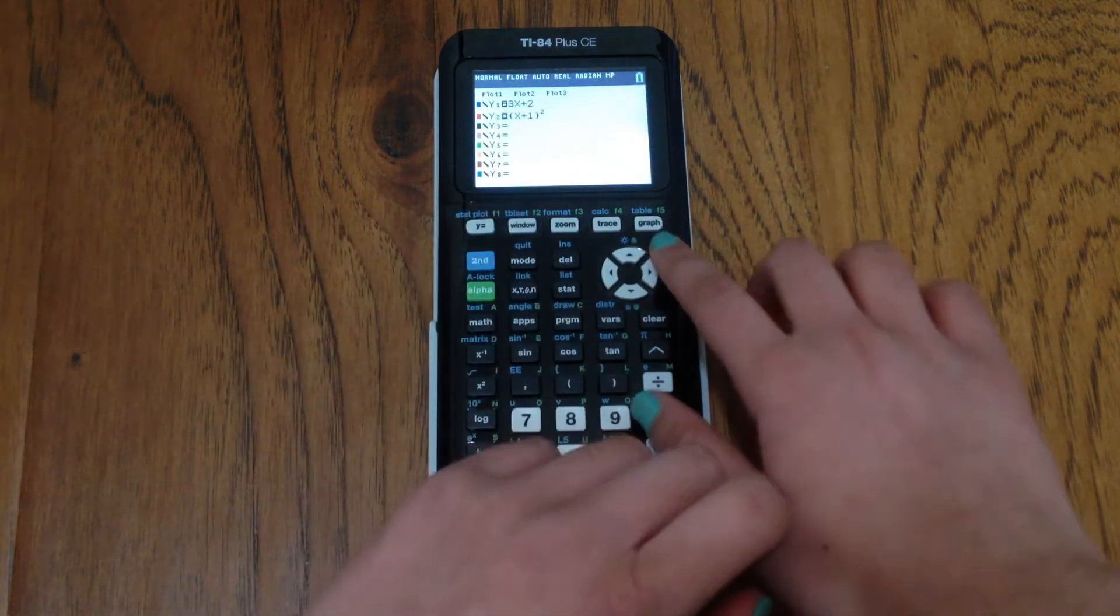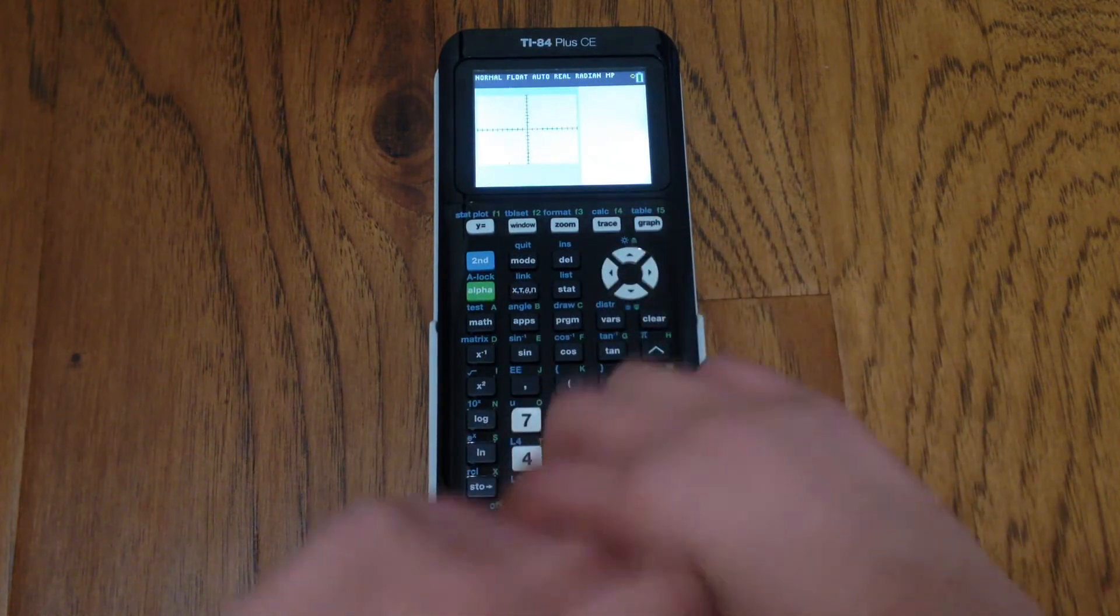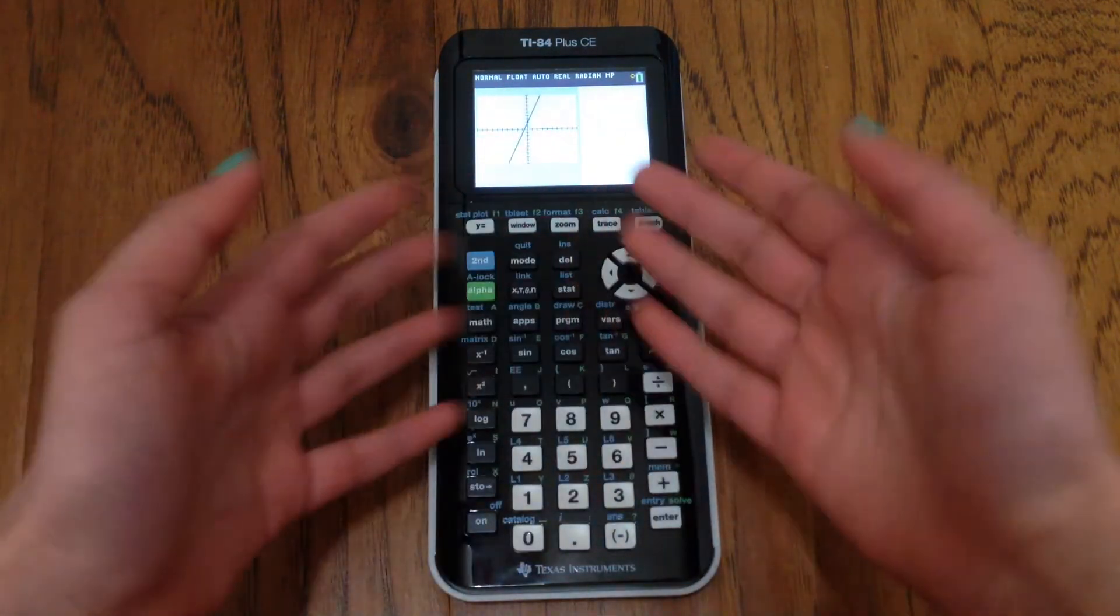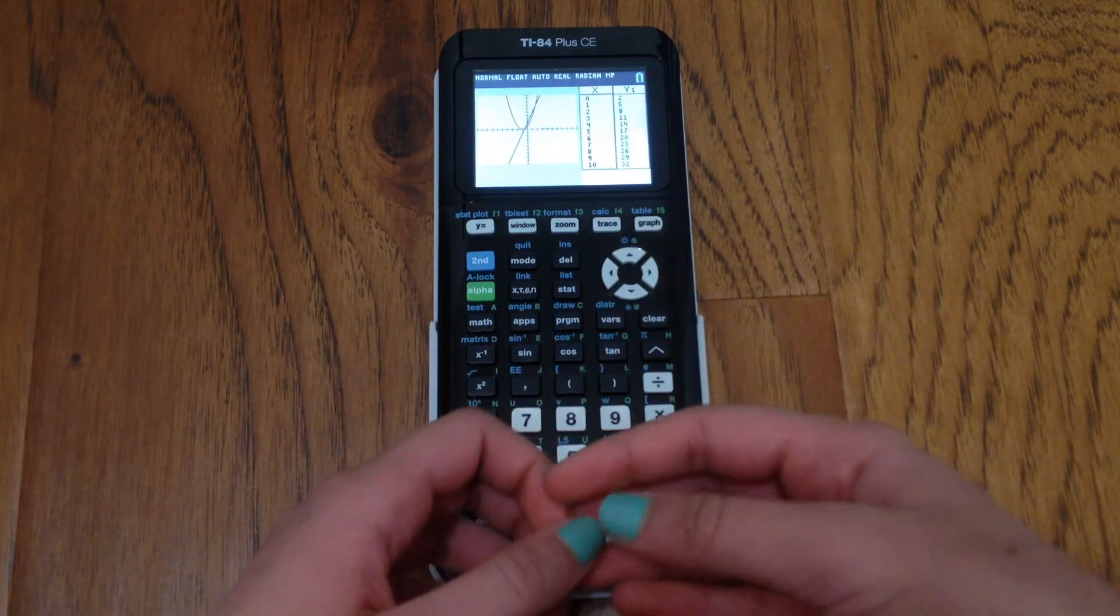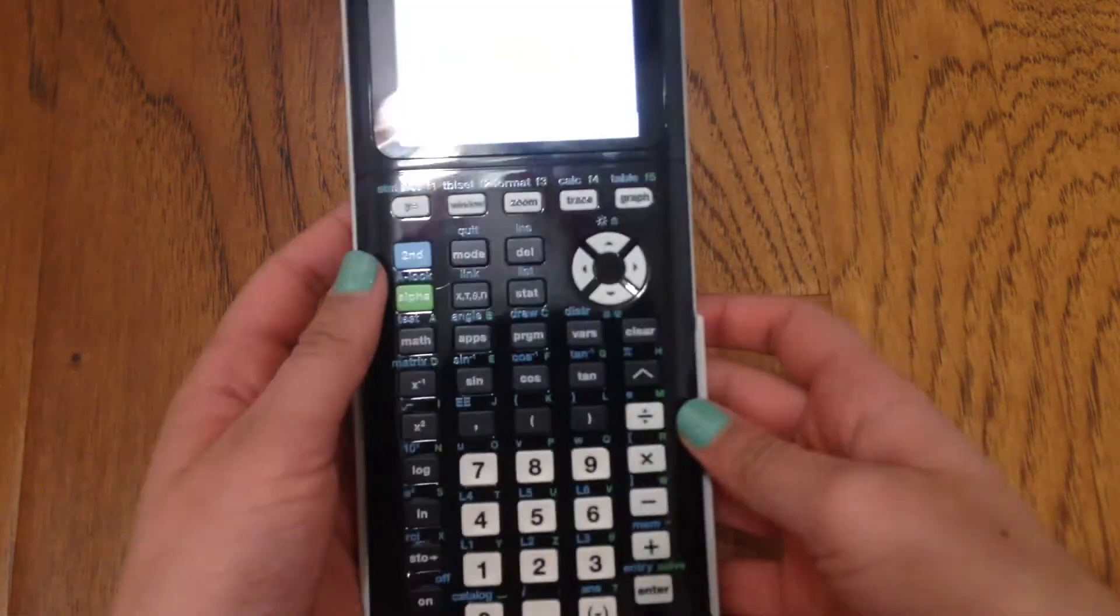Once you're there, you should be able to just hit graph. And then it takes a minute for the graph and the table to show up, of course. But once it does, you should be able to see both.